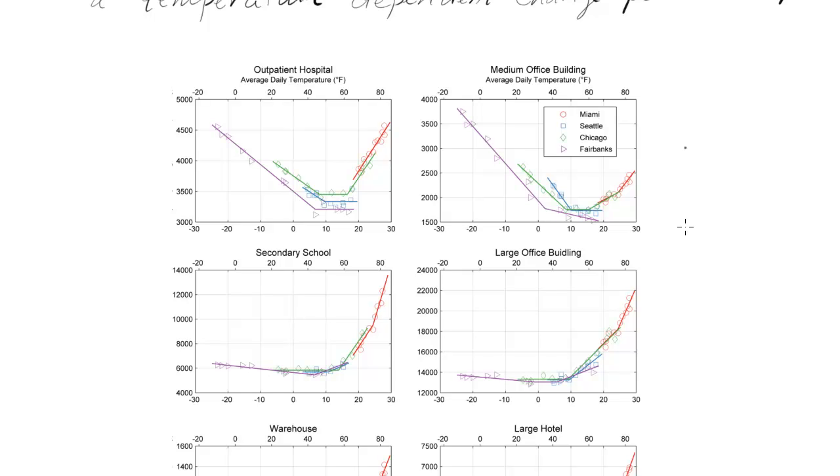Now this data comes from the DOE, Department of Energy. They have these reference Energy Plus Models, Energy Plus. And these are very useful, and there's also 16 climates, United States climates that go with it.